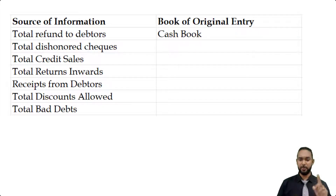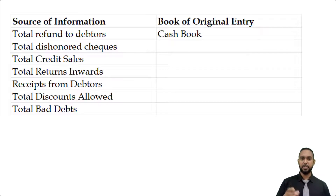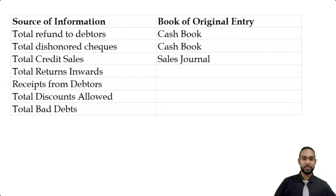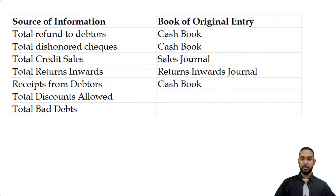The general journal records writing off bad debts, correcting errors, the purchase and sale of fixed assets on credit, adjustments, and closing entries. So, dishonored checks deal with the bank, and as such will come from the cash book. Total credit sales come from the sales journal or sales day book. Total returns inwards comes from the returns inwards journal. Receipts from debtors and discounts allowed will both be recorded in the cash book. And total bad debts will come from the general journal.